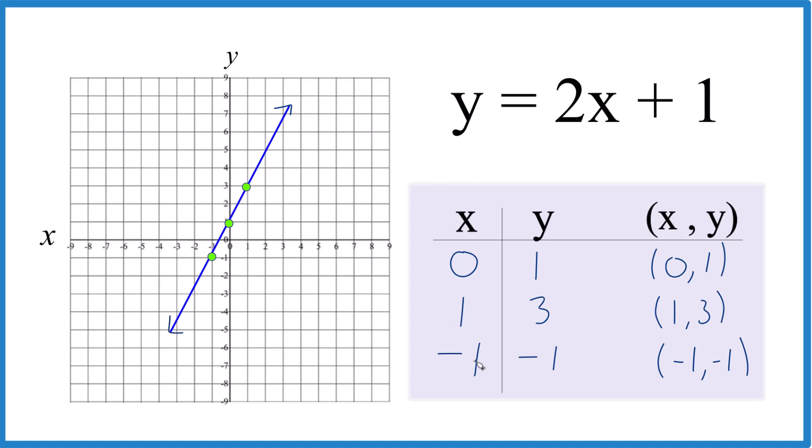And you could put any value in for x, you'd get a value for y, and that point would be somewhere on our line. Let's use slope-intercept form now.